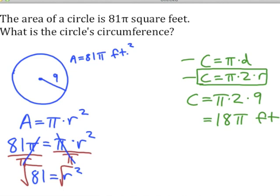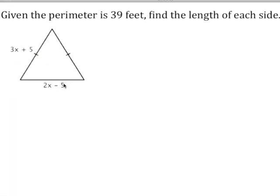Let's try one more. I believe that's fixed on your note sheet - it should be 2x minus 3. We know the perimeter is given to us as 39 feet.